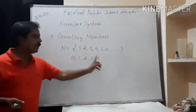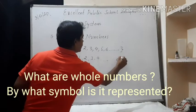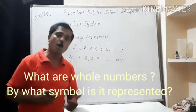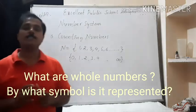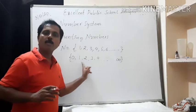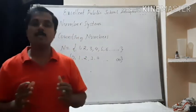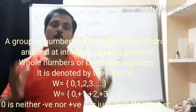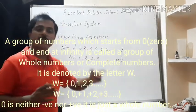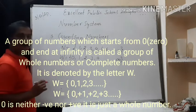So 0, 1, 2, 3, 4, and so on up to infinity makes one more group of numbers called whole numbers. The numbers starting from 0 and continuing 1, 2, 3, 4 up to infinity form the set of whole numbers. This set of whole numbers is denoted by the letter W. W stands for whole numbers, meaning complete numbers.